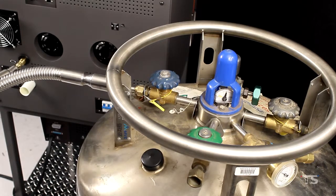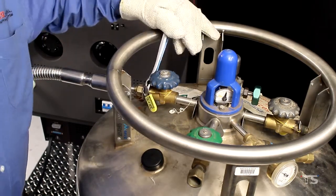Now use the adjustable wrench to tighten the connection at the blue liquid valve on your Dewar.